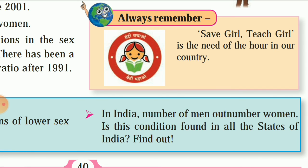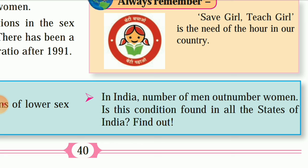In India the number of men outnumbers women, but is this condition found in all states of India? No. In India, Kerala is a state where per 1000 men there are 1040 women. So in Kerala it is not the same case. The sex ratio in Kerala is more than any other state in our country. In this way we have studied population composition of Brazil and India, and the sex ratio.